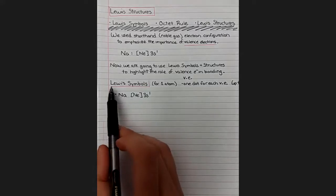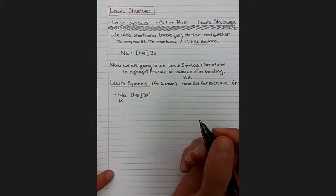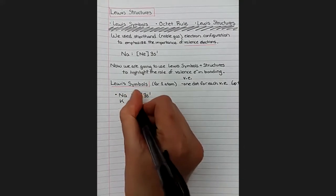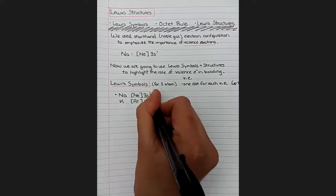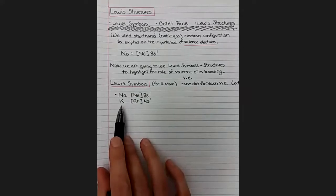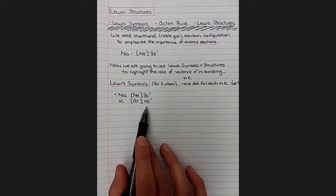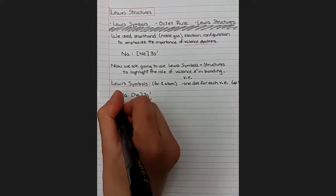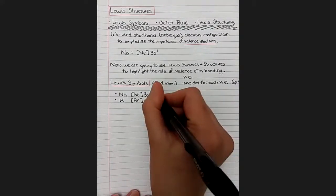And the nice part about using this type of Lewis symbol is that if we use another element from the same group like potassium, it emphasizes that they have the same valence electron configuration. Potassium is right below sodium. It has an electron configuration of 4s1 for its valence electrons, so it also just has a single dot. We're emphasizing those outermost electrons in the structure.